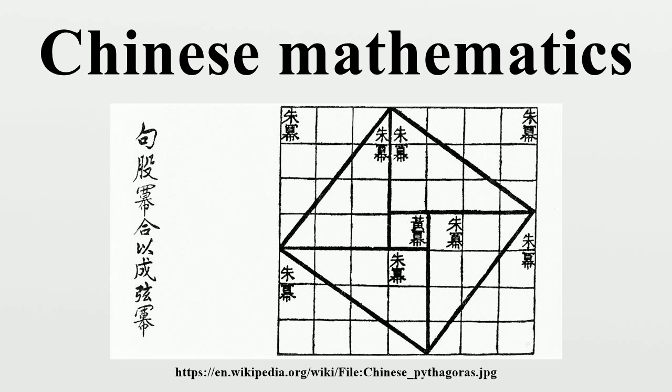It also described the fact that planes without the quality of thickness cannot be piled up since they cannot mutually touch. The book provided word recognition for circumference, diameter, and radius, along with the definition of volume.